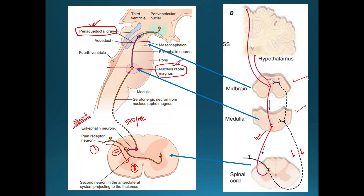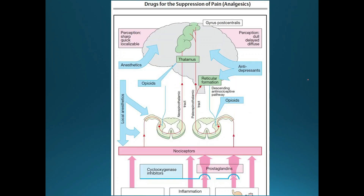This has all been discussed in physiology, but it is required before understanding opioids — specifically, to understand how when we give exogenous opioids like morphine, they act at different levels of the pain pathway. Now moving to the pharmacology part: how can we inhibit the pain pathway? We can approach it at different levels. The first approach may be inhibition of prostaglandins — we can use cyclooxygenase inhibitors, also called NSAIDs. NSAIDs, non-steroidal anti-inflammatory drugs, decrease inflammation and decrease prostaglandin generation, so ultimately the pain decreases.